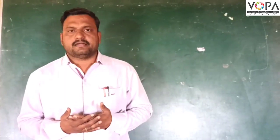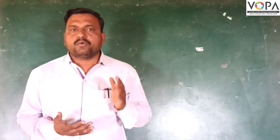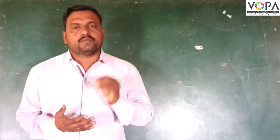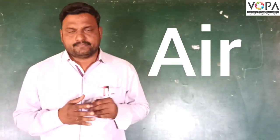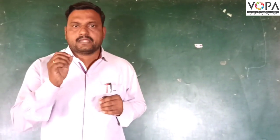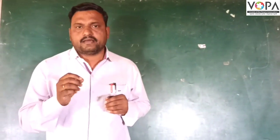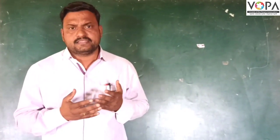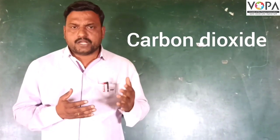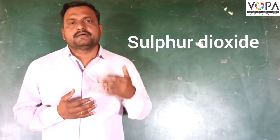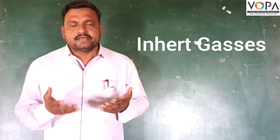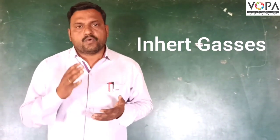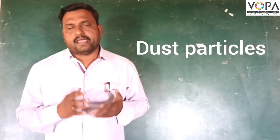In this part, we are going to take more information about our first natural resource, and that is air. Here in the atmosphere around the earth, air contains nitrogen, carbon dioxide, oxygen, sulfur dioxide, nitrogen dioxide, inert gases, water vapor, and dust particles.